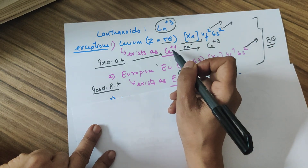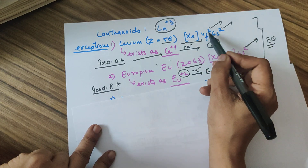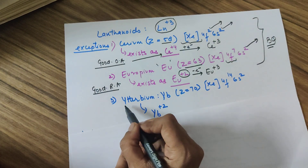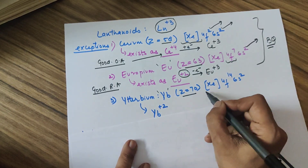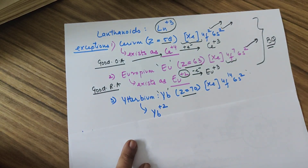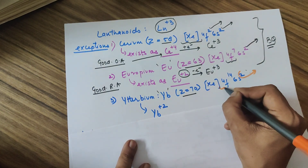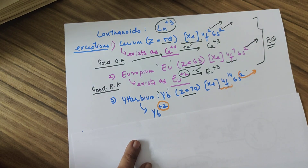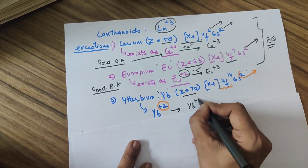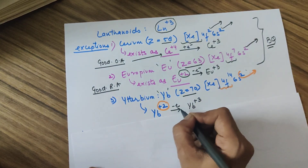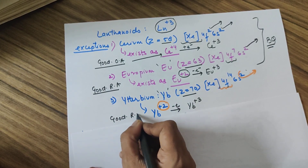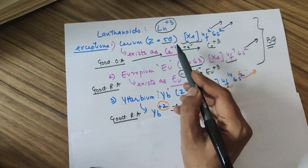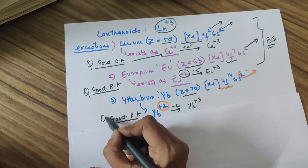Cerium(III) has configuration 4f¹ and is therefore paramagnetic — a board-asked question. The third exception is ytterbium (Yb, Z=70). Its configuration shows a fully filled 4f¹⁴, so it prefers to lose only two electrons, giving a +2 oxidation state. Since Yb²⁺ going to Yb³⁺ involves loss of an electron (oxidation), ytterbium(II) also acts as a good reducing agent, like europium(II). Why Eu²⁺ and Yb²⁺ are reducing agents while Ce⁴⁺ is an oxidizing agent are important board questions.